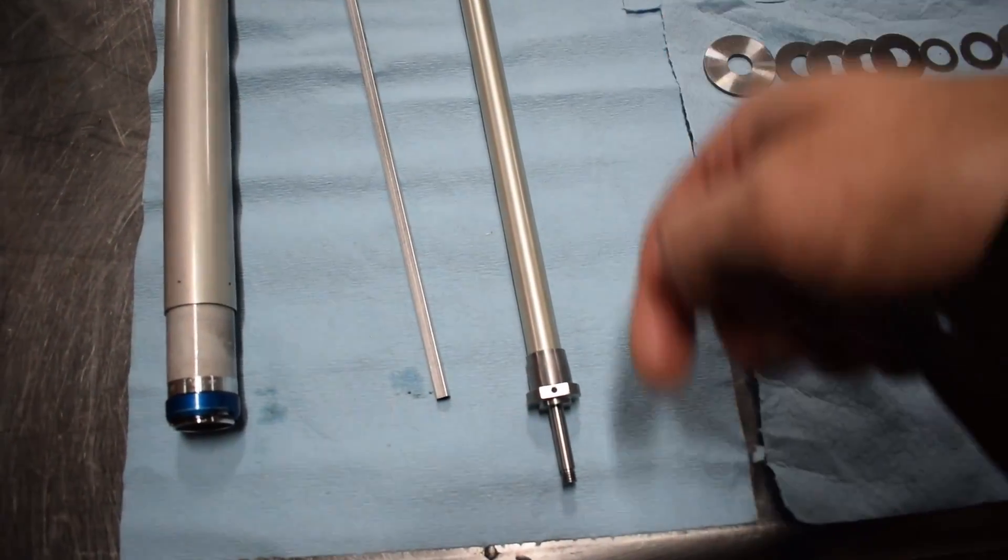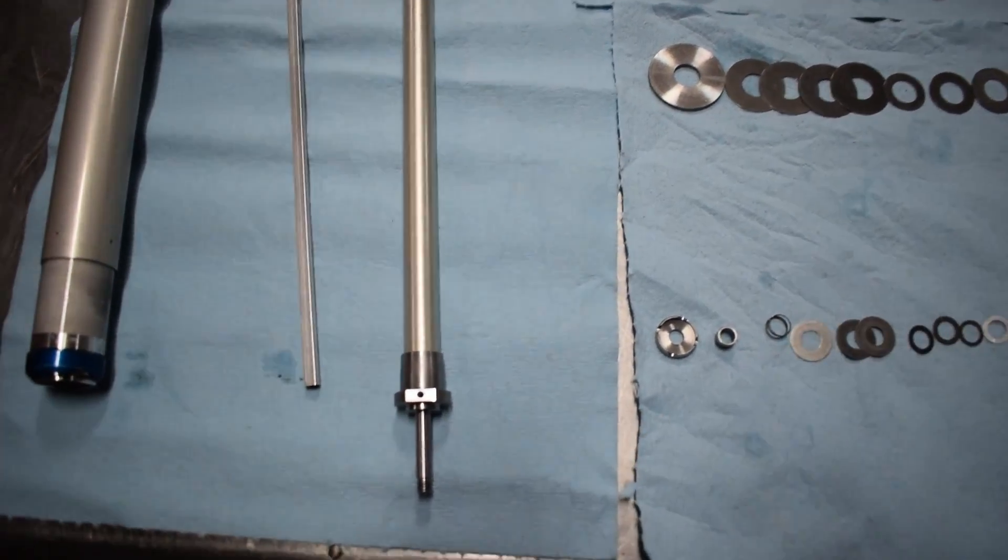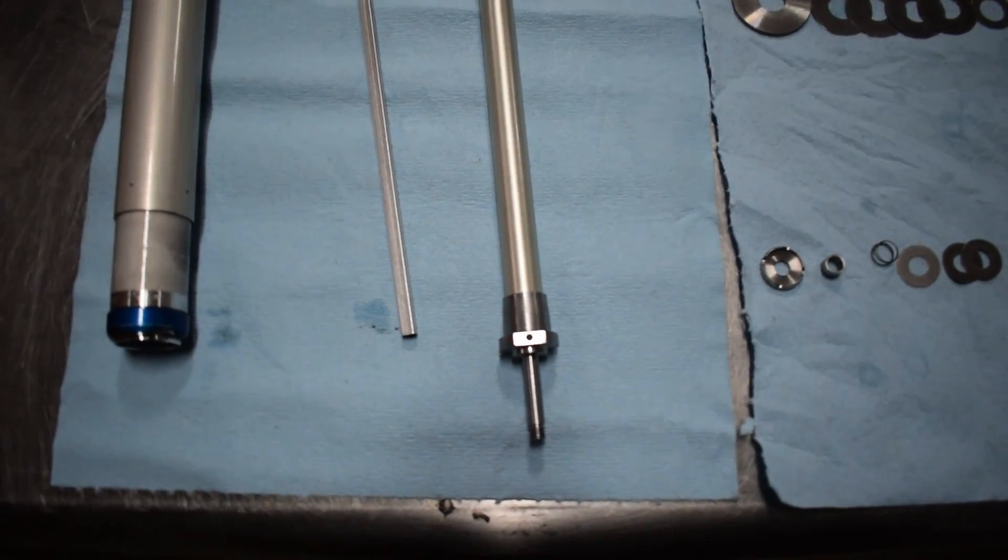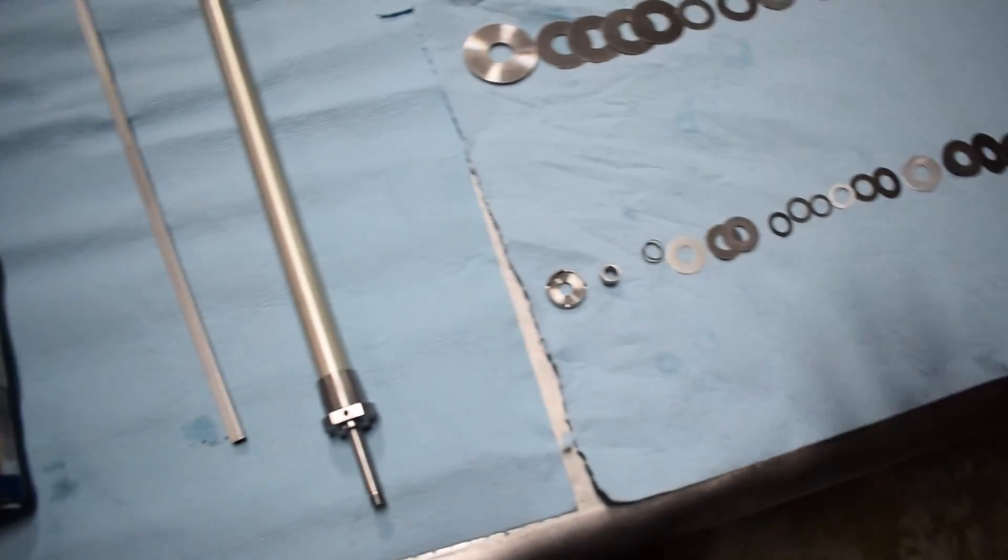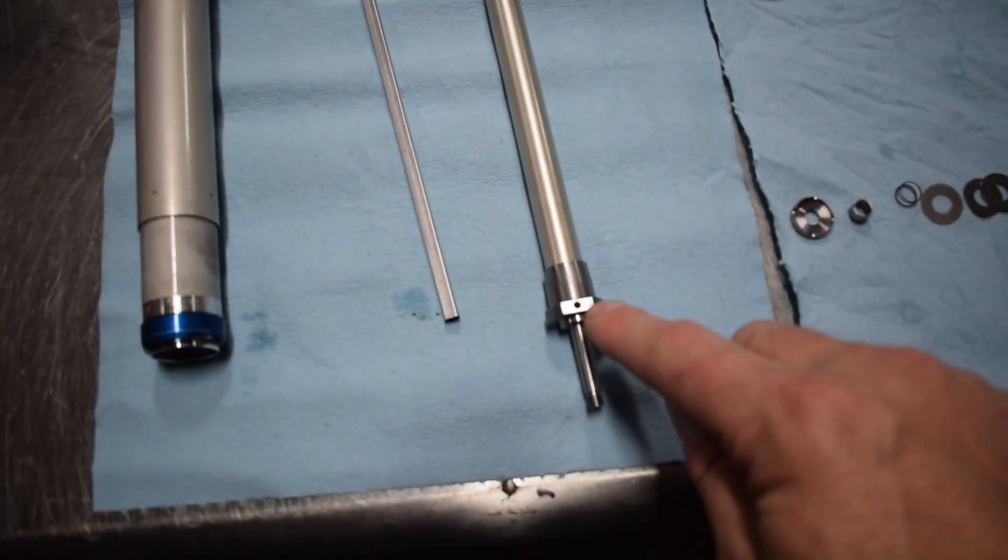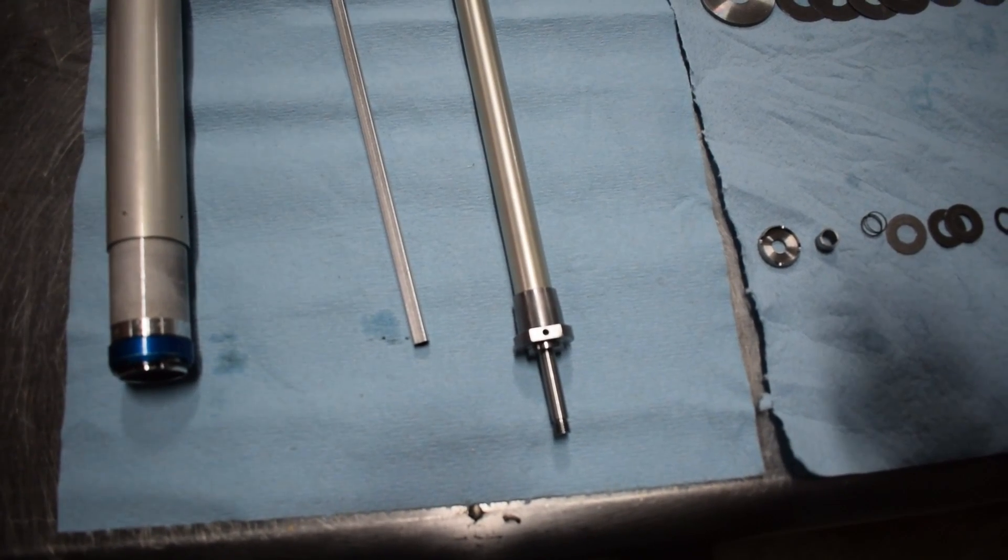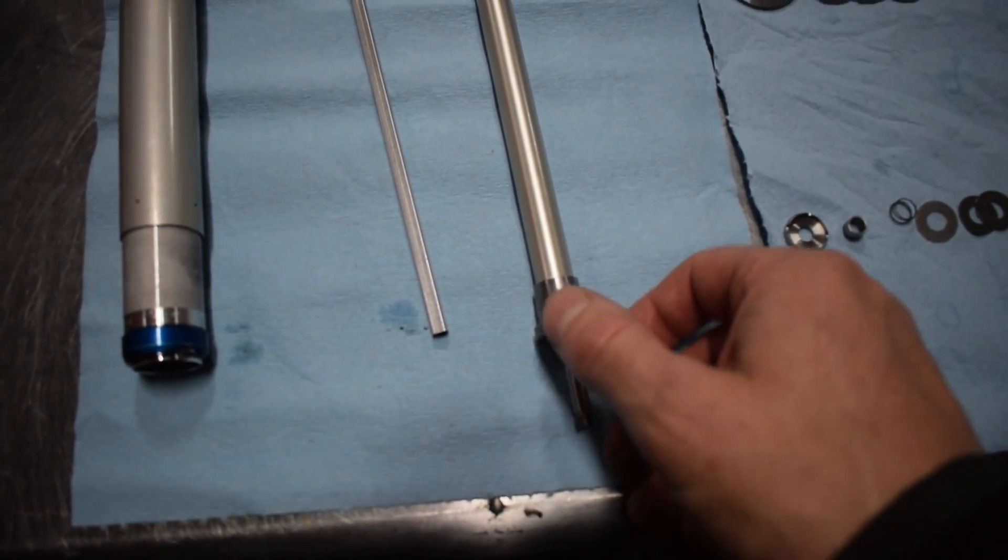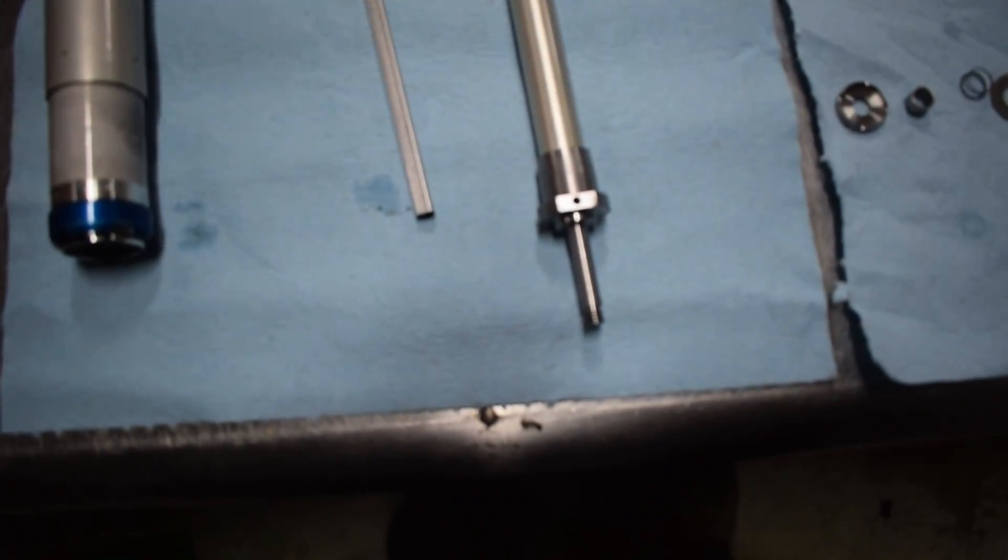So the rebound adjuster goes in and out. There's a little tapered needle inside. That tapered needle is what determines how much fluid can bypass your mid-valve piston, go completely around it, and just come in and out of that hole. The more area you have, the less damping you have. The less area you have, the more damping you have.